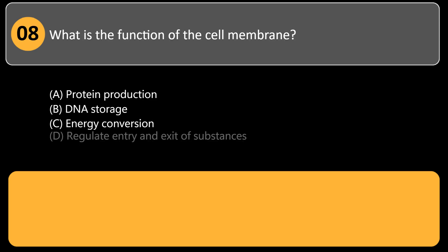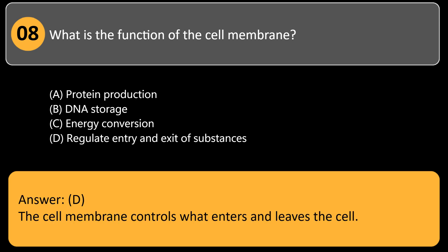What is the function of the cell membrane? A. Protein production, B. DNA storage, C. Energy conversion, D. Regulate entry and exit of substances. Answer: D. The cell membrane controls what enters and leaves the cell.